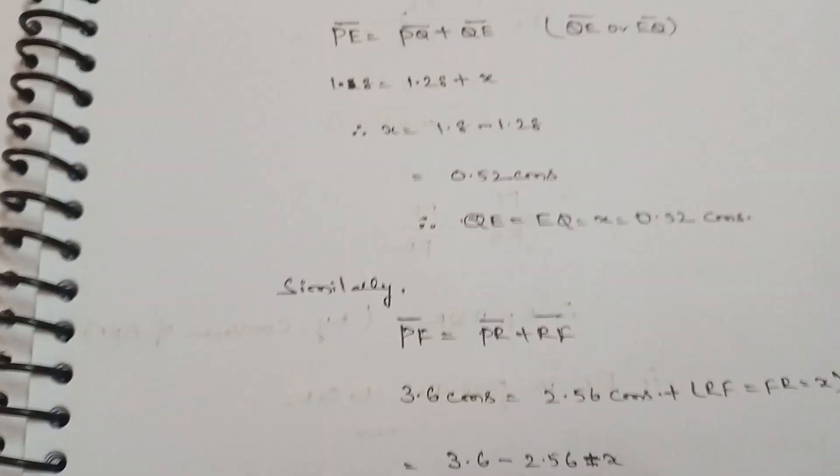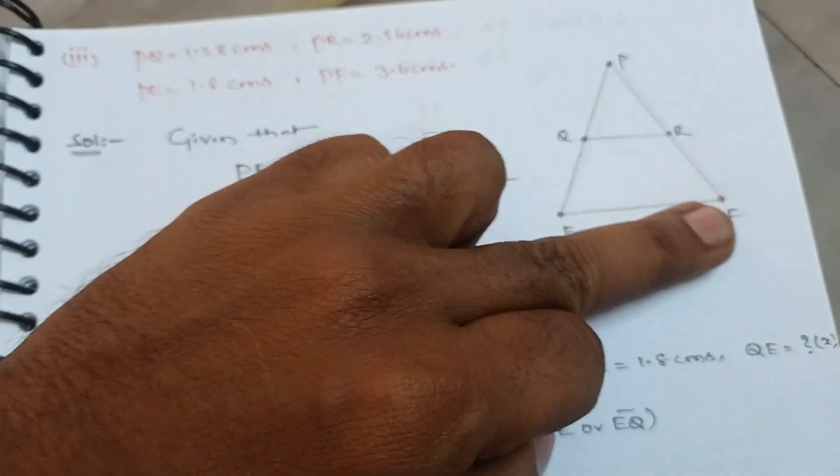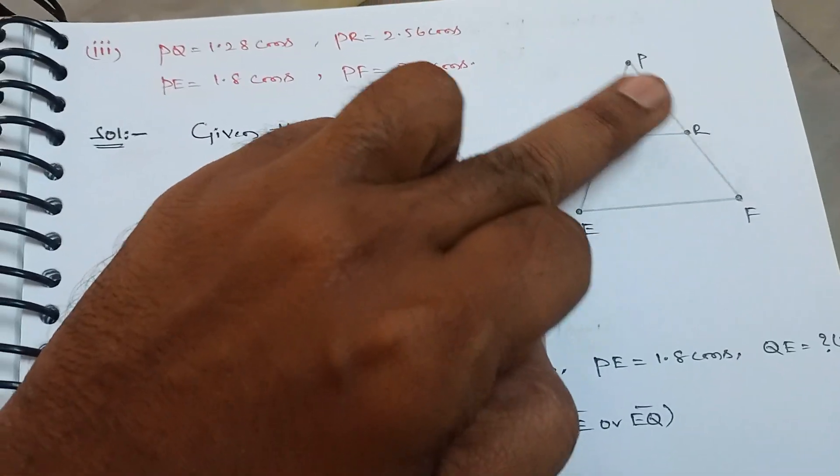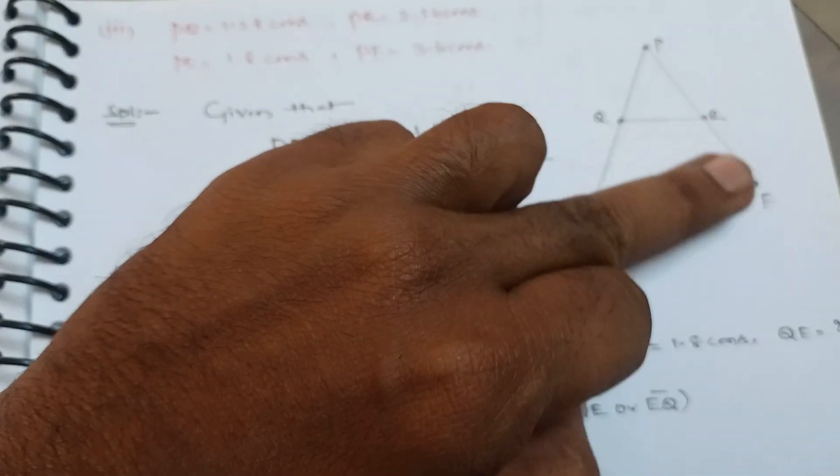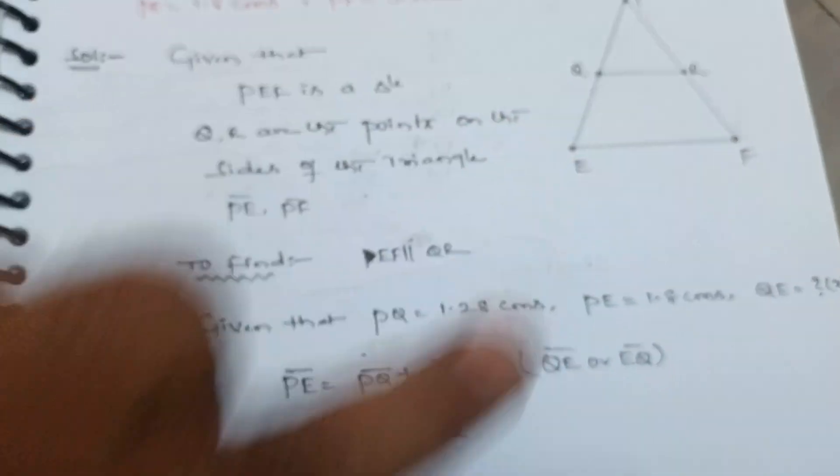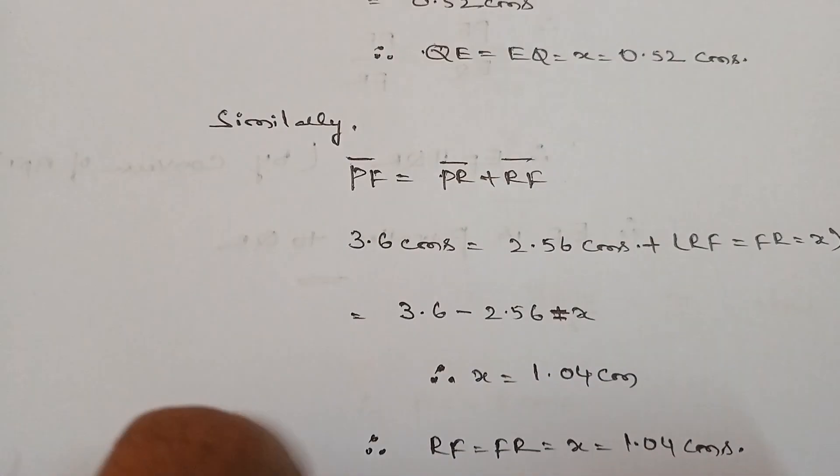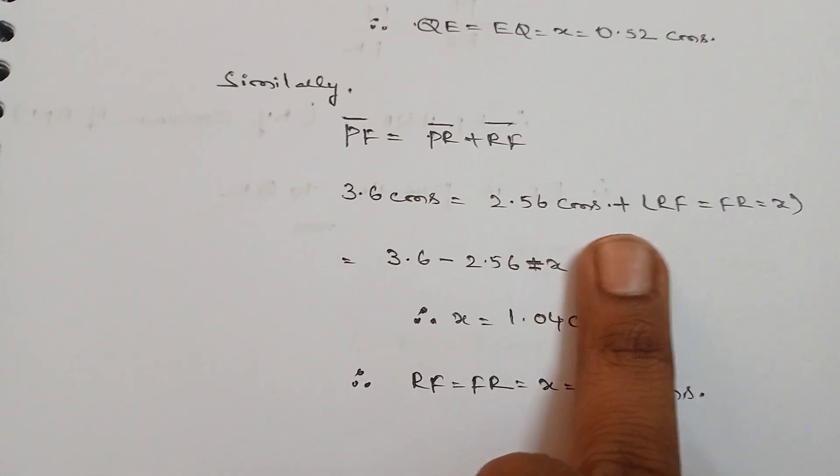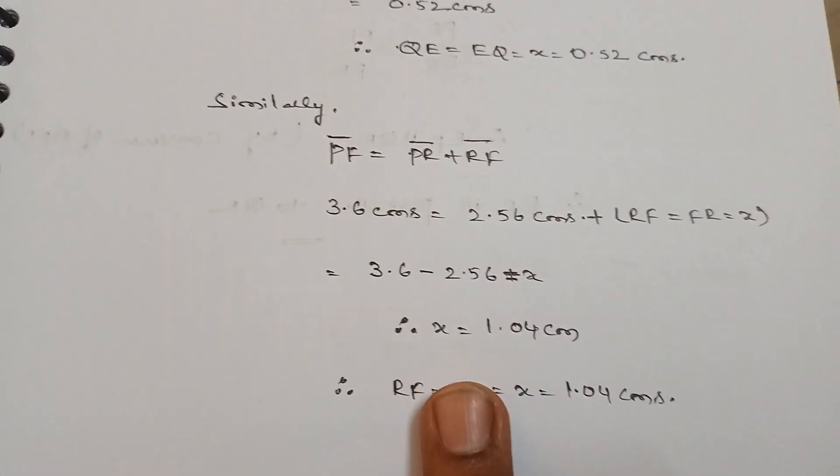Now you keep aside. Now coming to this side, guys. PF value they gave, PR value they gave. How to find RF value? That is same as usual way. Okay, now mention all the dimensions.